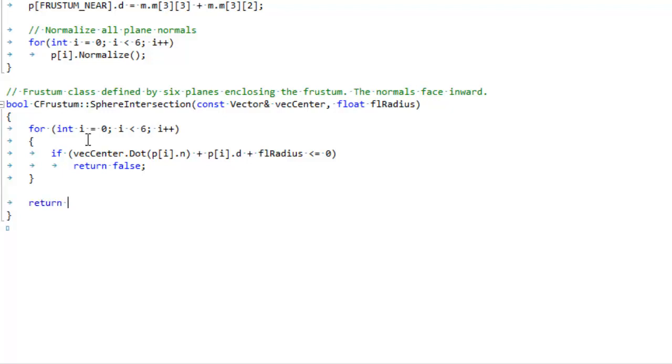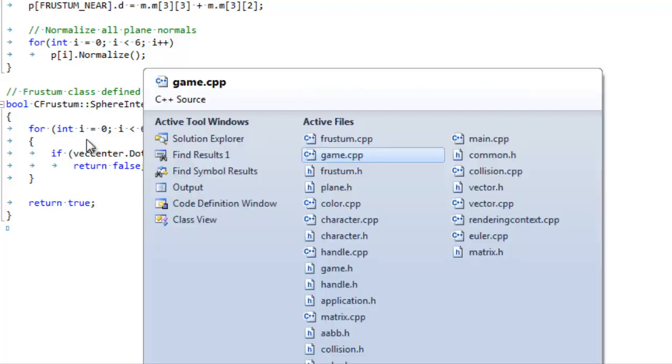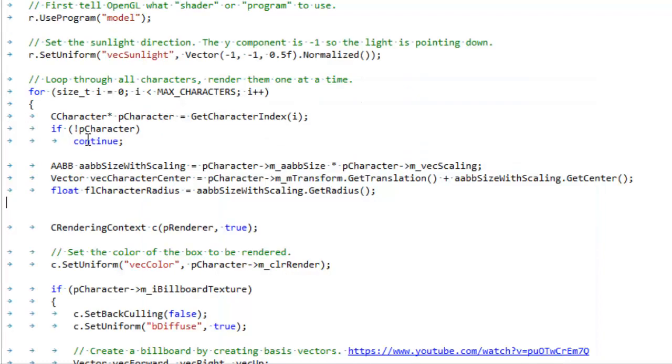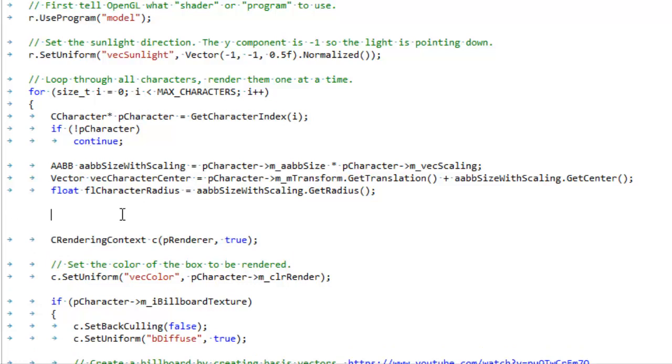If all six tests pass, then the sphere must be inside the entity since it's on the positive side of all six planes. Now let's go to our draw function. And this is the part where we decide whether or not to draw this entity.